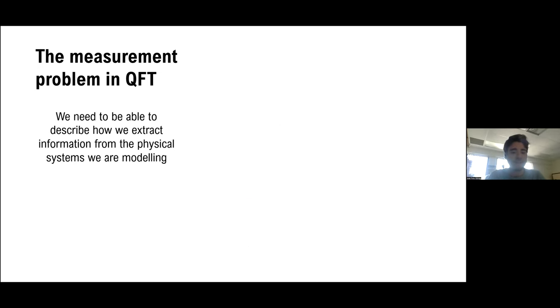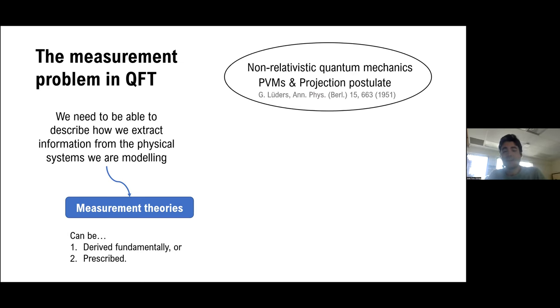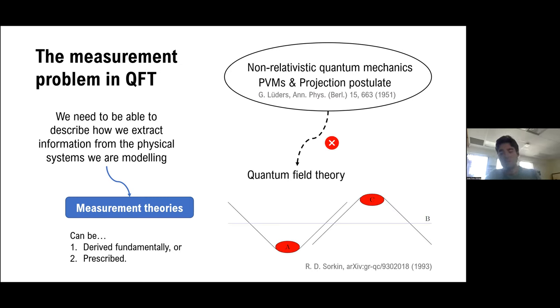Well, since this is the main topic of this session, let me start with the measurement problem in QFT. We know that we need to be able to describe measurements, and in physics we do that using measurement theories, which can be either derived fundamentally or prescribed. We know that the latter is the case of standard quantum mechanics, and the question is whether we can actually extend this measurement theory to quantum field theory. Since Sorkin's paper, we know that the answer to this question is no, because whether we use a non-local projection or a local projection, we are going to run into situations in which faster-than-light signaling is possible. So this leaves QFT without a measurement theory.